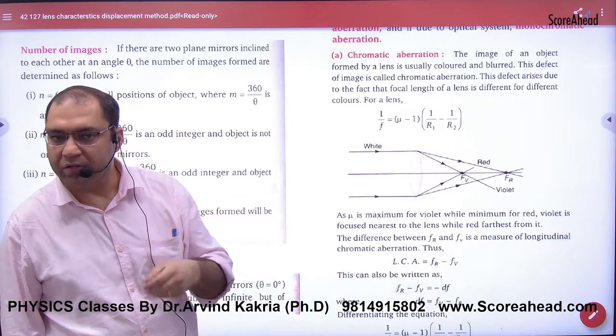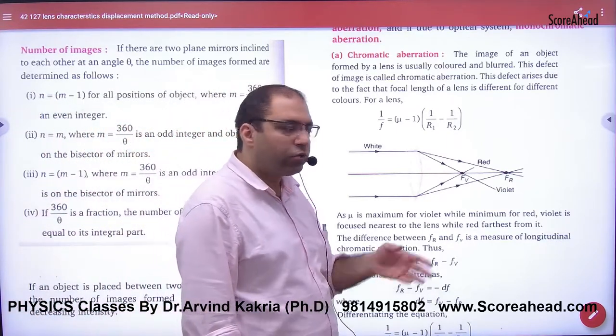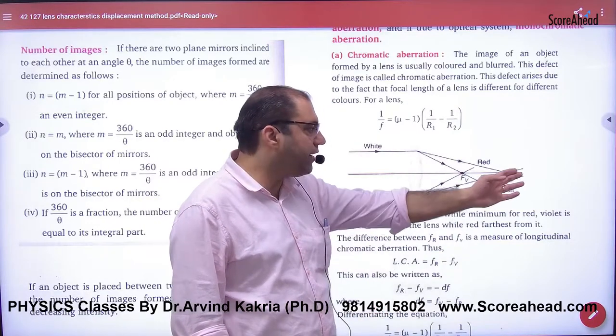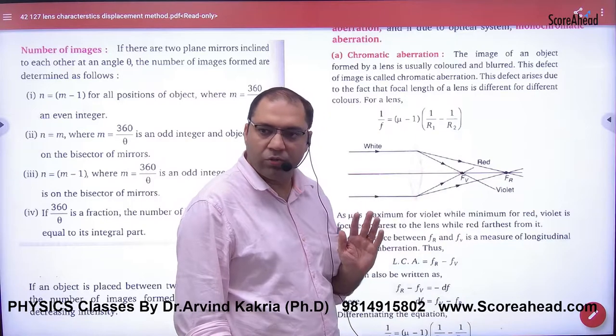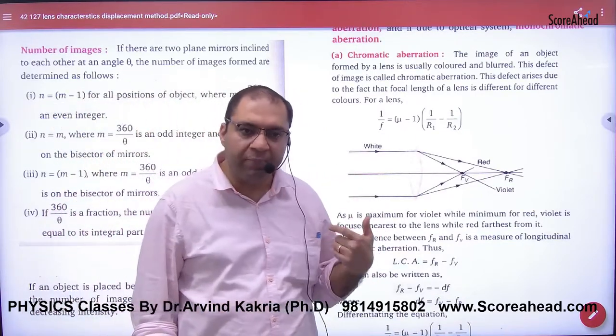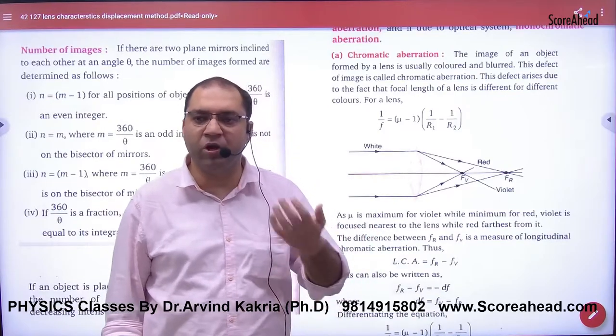This is called dispersion. When light comes out in seven colors, every color will converge differently - red first and violet last. So multiple focal lengths start, which we have not considered when studying this dispersion effect in optics.